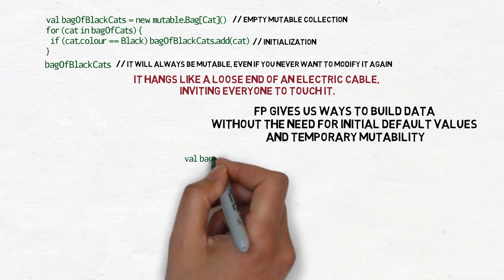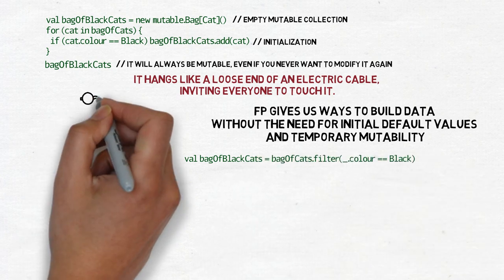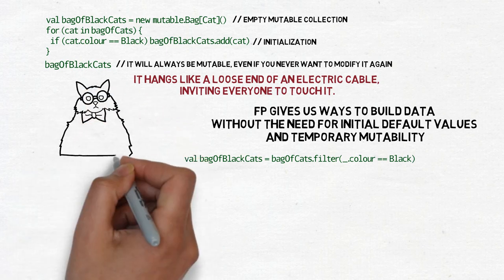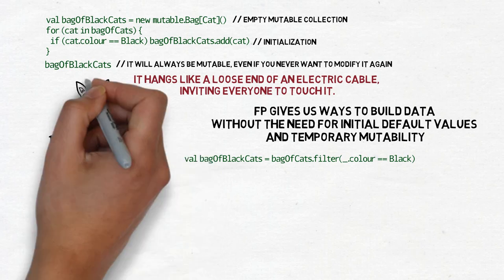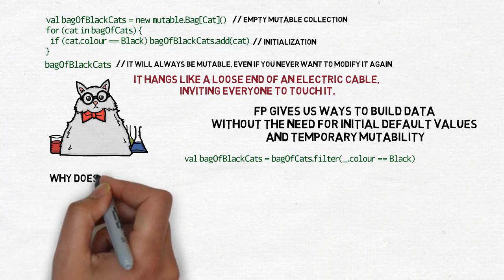Functional programming gives us ways to build useful value without the need for initial default values and temporary mutability. The data structure, even a very complex one, can be computed through extensive use of higher order functions, and then assigned to a constant, preventing future modifications. If we need an updated version of it, we can simply create a new data structure, instead of modifying the old one.